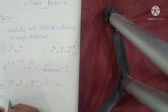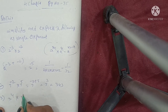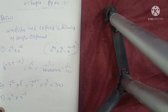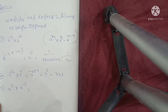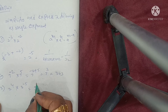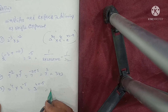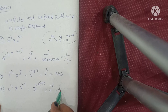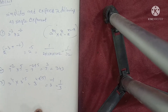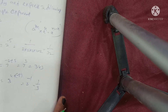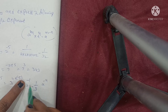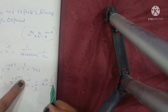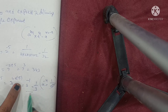Third one: 3 power of 4 into 3 power of minus 5. Same formula substitution: 3 power of 4 plus minus 5, which is equal to 3 power of minus 1. That is equal to 1 by 3. The formula here: a power of minus n equals 1 by a power of n. That is why we convert it to 1 by 3.